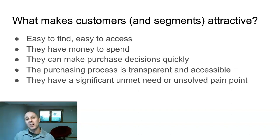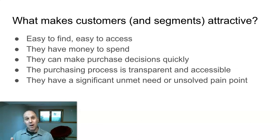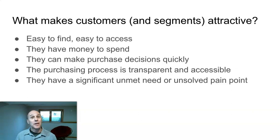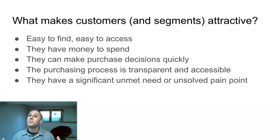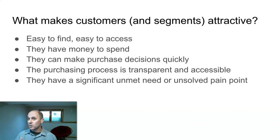What makes customers and segments attractive? First, they should be easy to find and easy to access — you can figure out who they are, where they are, and you can figure out the entry point to talk to them. There are many types of customers and segments that are very difficult to find. Second, they have money to spend. When customer segments have money to spend, they are fundamentally more attractive from a business perspective. We like when customers can make a purchase decision quickly; many sectors and types of customers take months or years to make a decision, which is not attractive to a startup company.